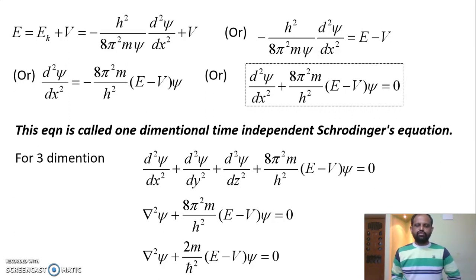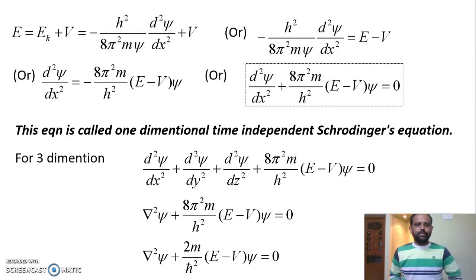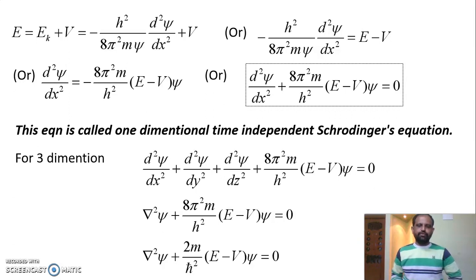We can also express this in terms of h-cross, where h-cross equals h divided by 2π. Rearranging, we get ∇²ψ + (2m/ℏ²)(E − V)ψ = 0. This is the three-dimensional time-independent Schrödinger equation, and this is a very important derivation from an examination point of view.